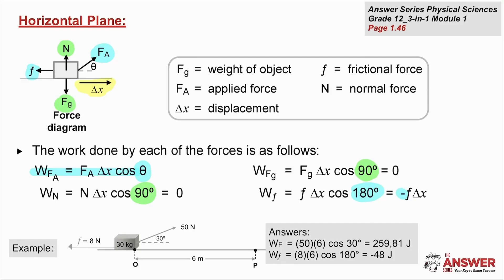You can see these calculations being used in the example at the bottom of the screen. There's a 50 Newton force moving an object a total distance of 6 meters, but there's an angle of 30 degrees between the two vectors, and so the 50 Newton force does positive work of 259.81 joules. The friction of 8 Newtons opposes that movement of 6 meters — the angle between the two vectors is 180 degrees, and so you end up with a negative amount of work done by the frictional force.